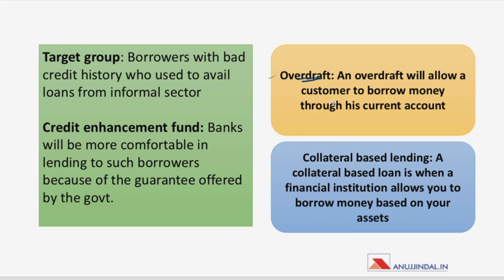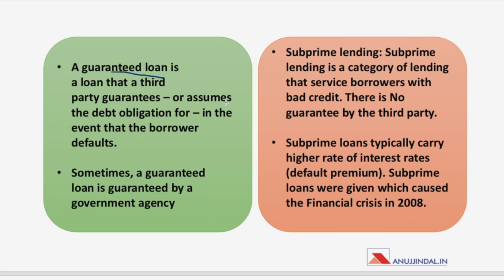The first term is overdraft — when you go to a bank and ask for an overdraft against your current account, with a limit attached. The second is collateral-based lending — based on some asset, like jewelry, you get a loan; if you cannot repay, the bank keeps your asset. The third is a guaranteed loan — a third party, which could even be a government agency, guarantees that the borrower will repay.